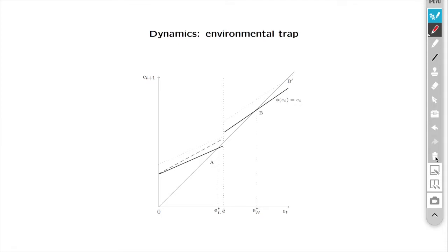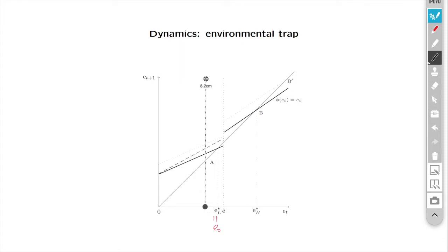The first possibility involves the environmental threshold. Imagine that we move the environmental threshold to the left-hand side of the initial environmental quality — remember that we are here. When you do that, you will see that the trap is going to disappear. So we move the environmental threshold to the left, and in this case the environmental threshold is now here — this is the new environmental threshold.